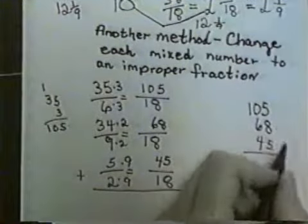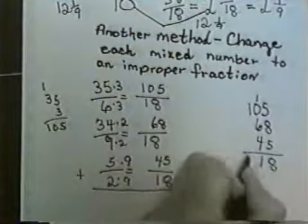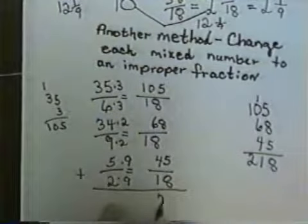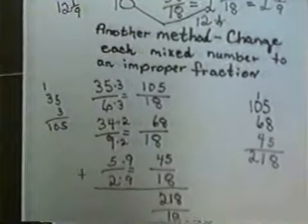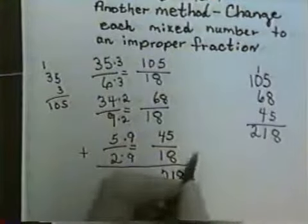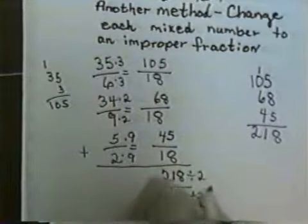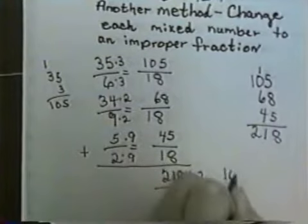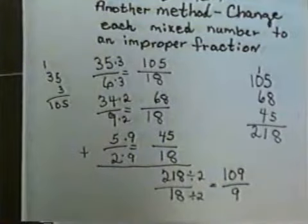And add those numerators up. That would give me 218 eighteenths. Now, I need to reduce that, so I'm going to go ahead and divide out my 2s first. I'm going to divide each of these by 2. When I do, this one is going to become 109, and this one's going to become 9. Now, that would be okay to leave the answer as 109 ninths.